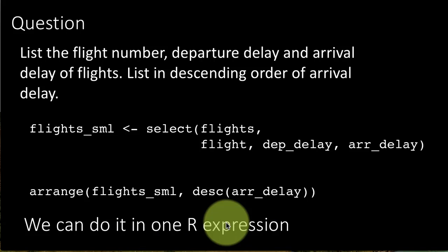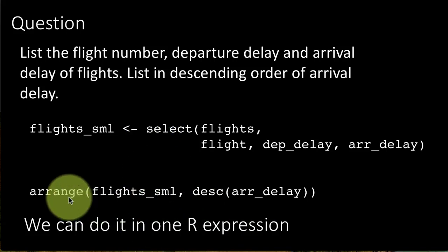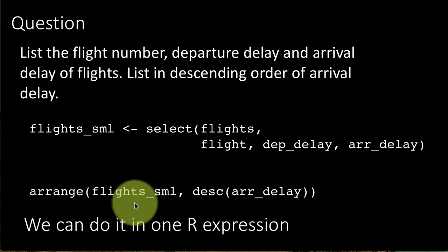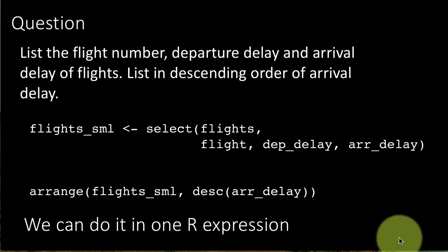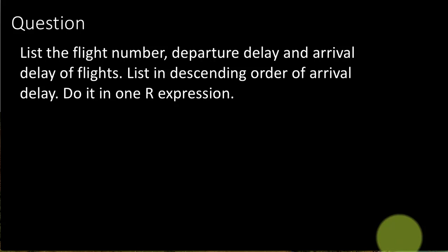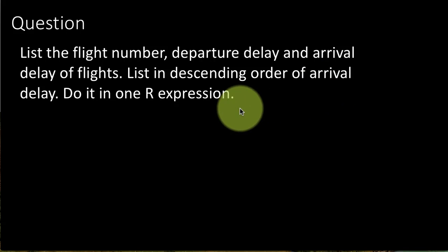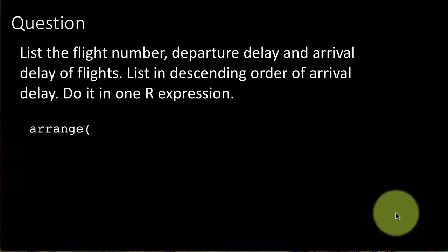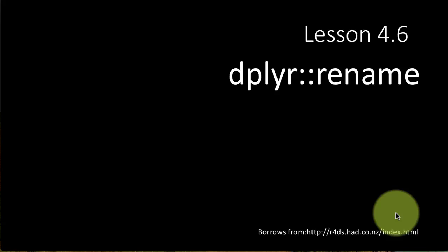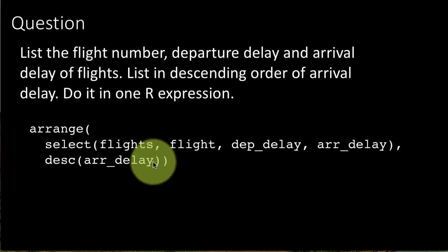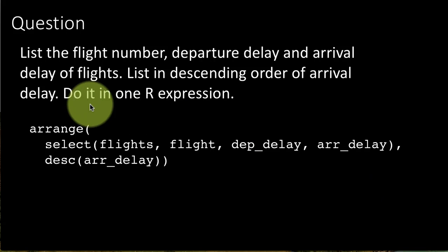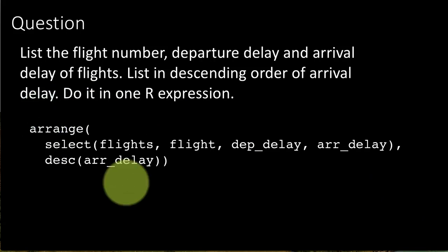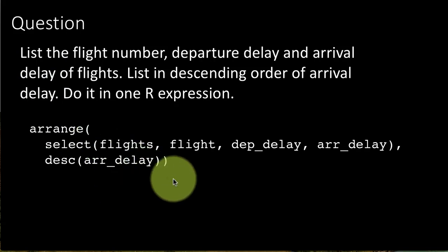We can also do the same thing in a single R expression — put the entire select() call as the first argument inside arrange(), instead of using the intermediate flights_sml variable. However, you can see how this expression quickly becomes cumbersome to read and understand. Pipes, which we'll cover later in the course, are the way to go to make these expressions clean and easy to follow.